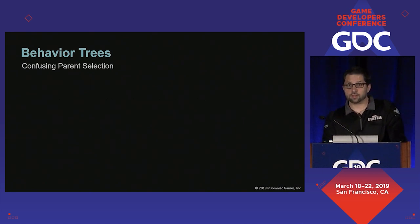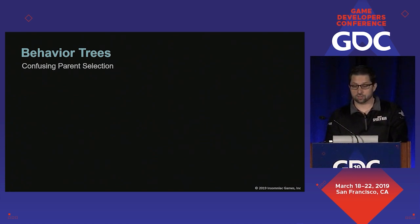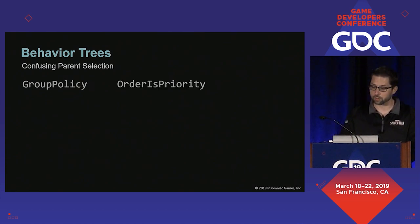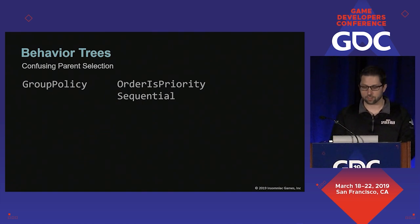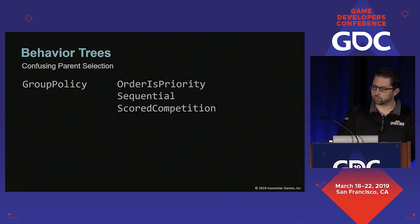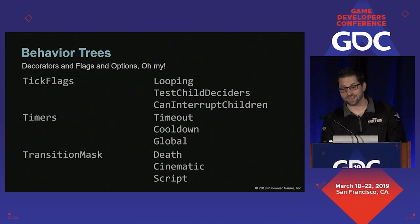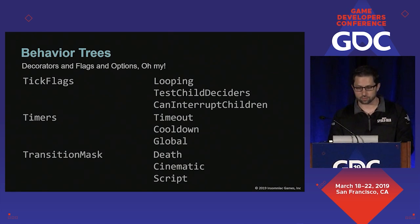Furthermore, in order to get the correct node to activate at the correct time, we often needed to consider how a node's parents selected which of its children to run. We call that the group policy, and there are three types. The order of the children could be a priority ranking, or the order could be a sequence with each node running one after the other, or the node whose decider callback returns the highest value would be the one to run. And if your behavior tree implementation is anything like ours, you have plenty of decorators and flags and other confusing options.